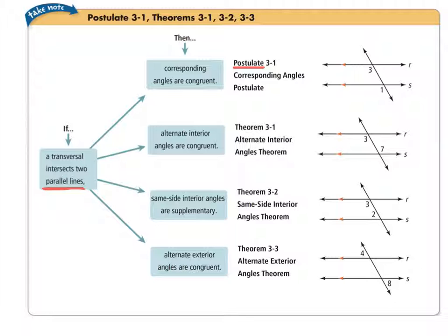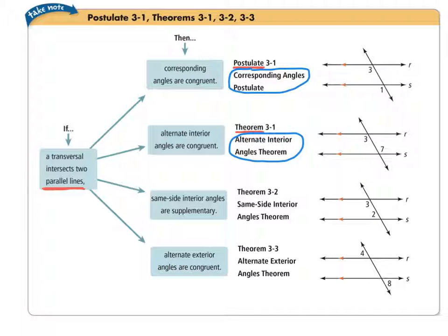Now looking at the next one, we have the alternate interior angles theorem. That is a theorem — that's why the number 3-1 is the same, because it's the first postulate and then it's the first theorem. Please don't get confused between the two. I would actually call these by name, not by theorem or postulate number. If a transversal intersects two parallel lines, then alternate interior angles are congruent.